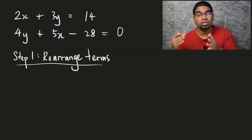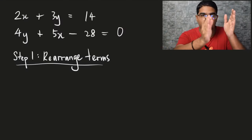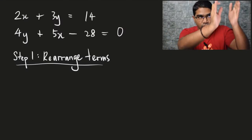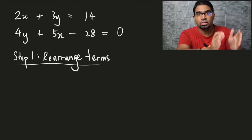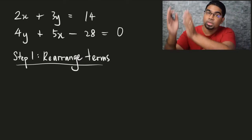Before we even begin using matrices, the very first step is actually to just rearrange the terms. When we rearrange the terms, we want all the like terms to be aligned vertically — we want all the like terms to be together.